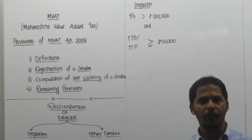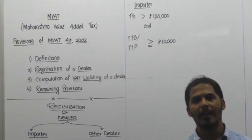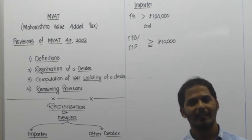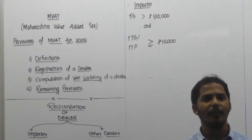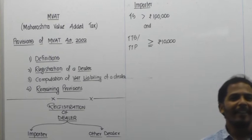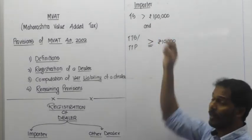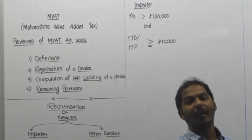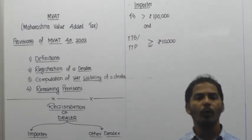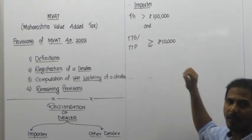Note: for the first condition, it must be greater than 1 lakh — not equal to 1 lakh. Even if it is exactly 1 lakh, it does not satisfy the condition. For the second condition — total taxable sales or total taxable purchase — 10,000 or more qualifies, because it says 'greater than or equal to 10,000.' So even 10,000 exactly will satisfy the second condition.